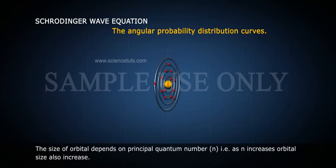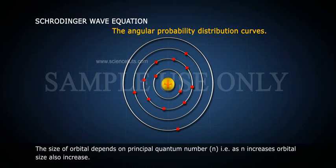The size of orbital depends on principal quantum number n. That is, as n increases, orbital size also increases.